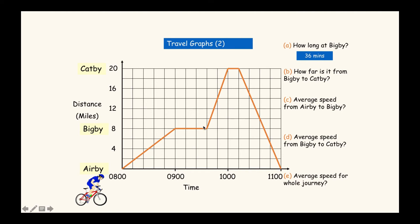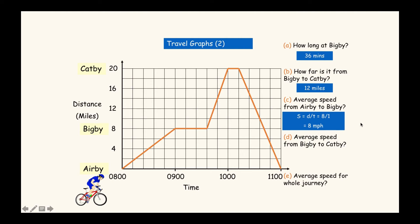How far is it from Big B to Cat B? Be careful - you've already traveled 8 kilometres, so you only want the distance from 8 up to 20, which is 12 miles. For average speed from Air B to Big B: they traveled 8 miles in one hour, so speed equals 8 miles divided by 1 hour, giving 8 miles per hour on their bikes.